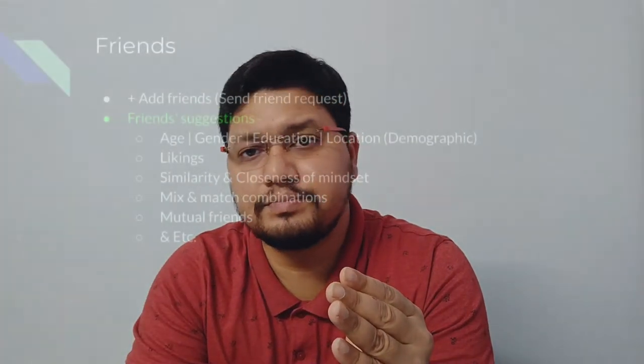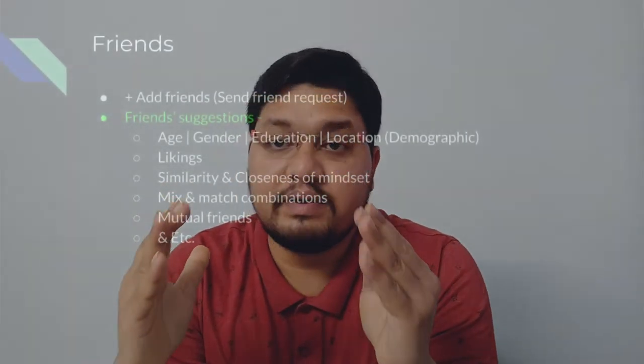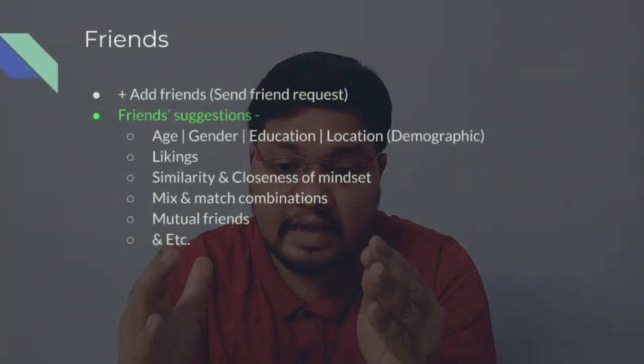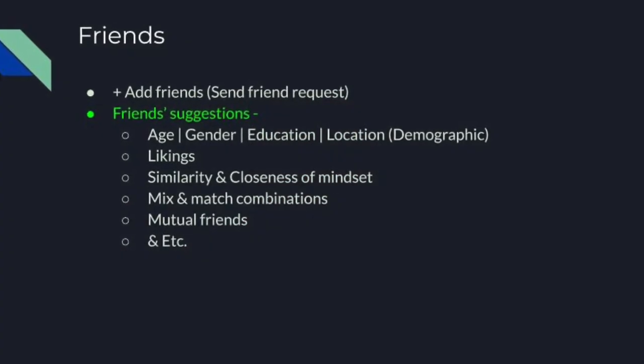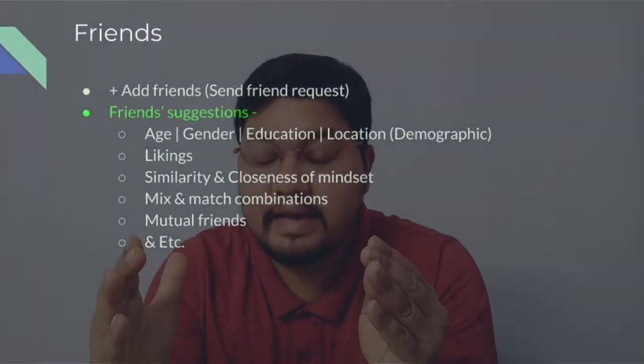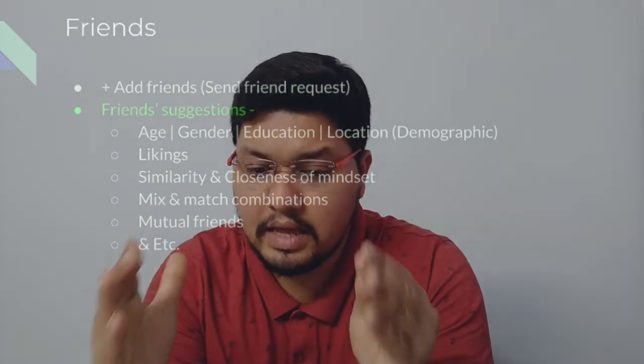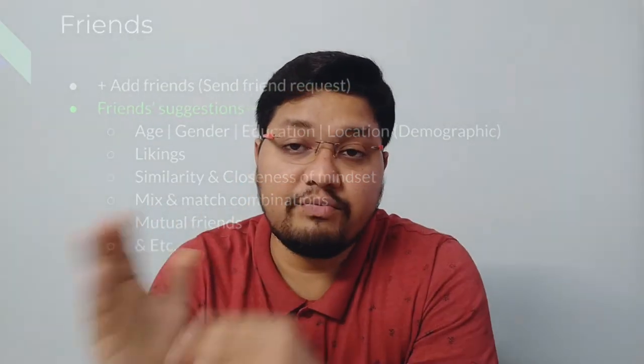Now we will be talking about the friends component — add friends or send friend request. The friend suggestion recommendation engine is developed based on age, gender, education, location, likings, similarity and closeness of mindset, mix-and-match combinations, mutual friends, and many more areas.